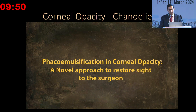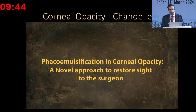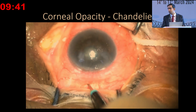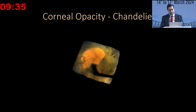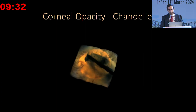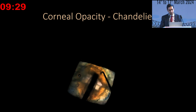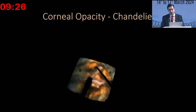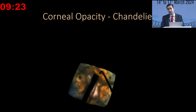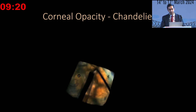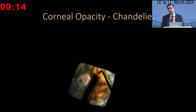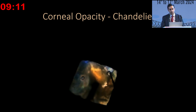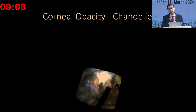The first video I'd like to play is regarding corneal opacities. Very often the visualization is poor in these particular cases, and we've actually resorted to the chandelier technique to help us. You can see the 23-gauge trocar cannula is placed, and as the chandelier comes on, the illumination becomes much better. Generally, you switch off the microscope light, and you can see the phacoemulsification being done here.